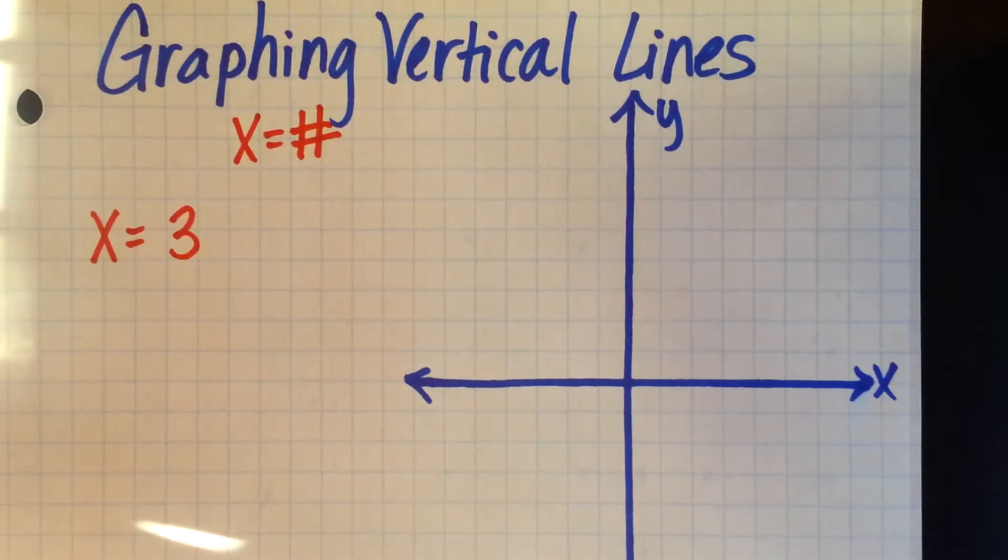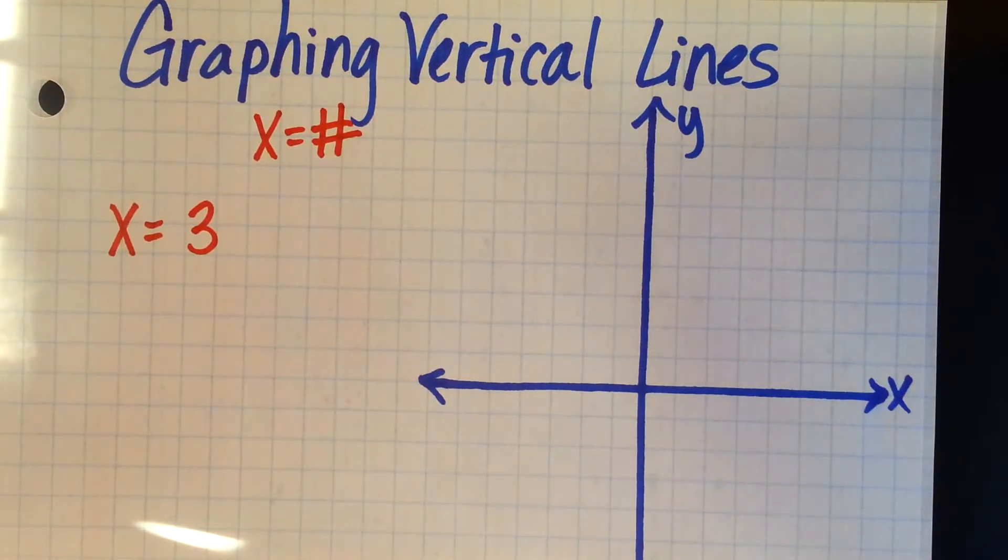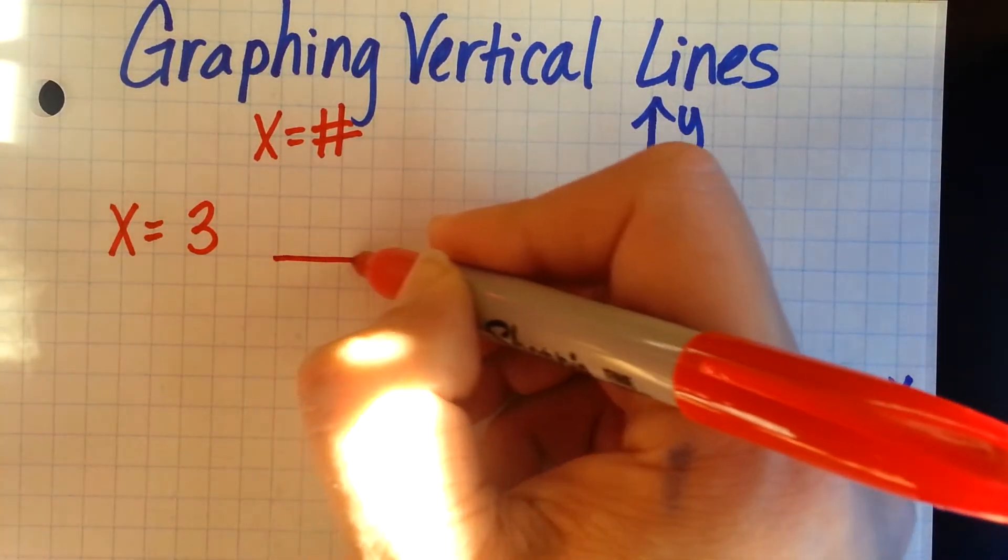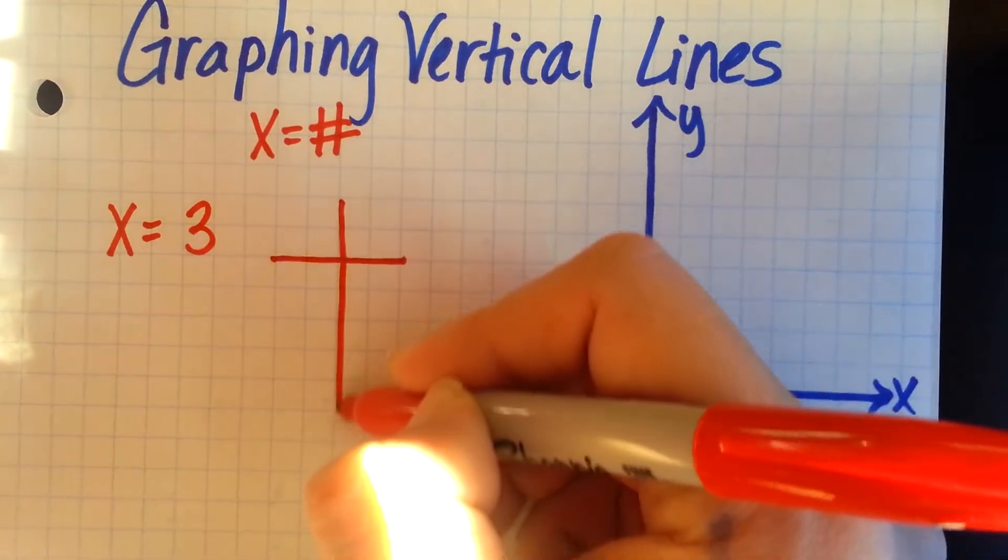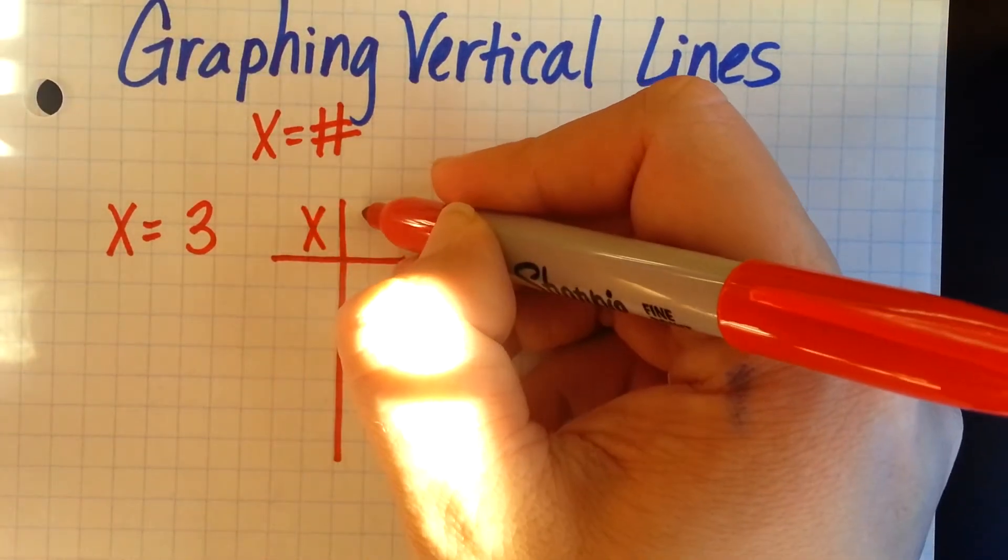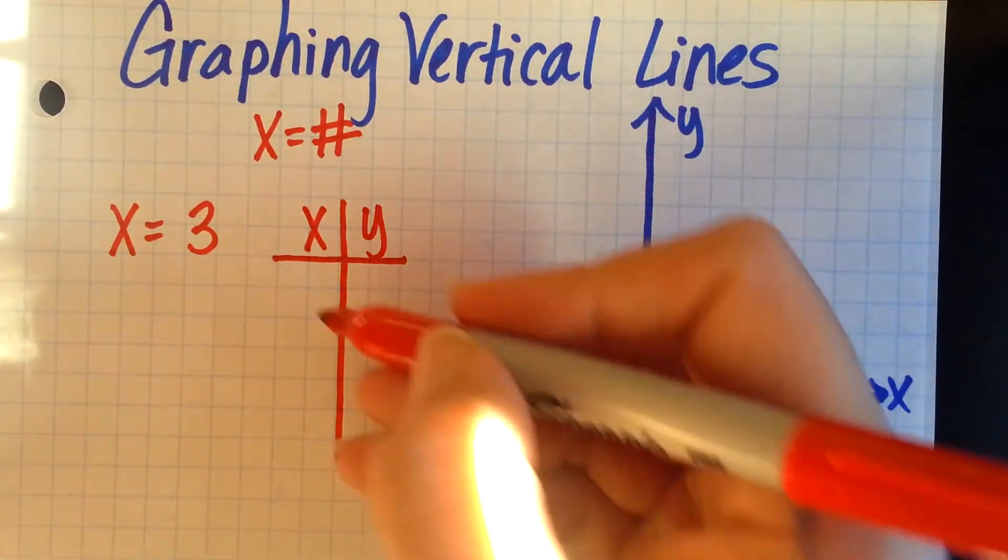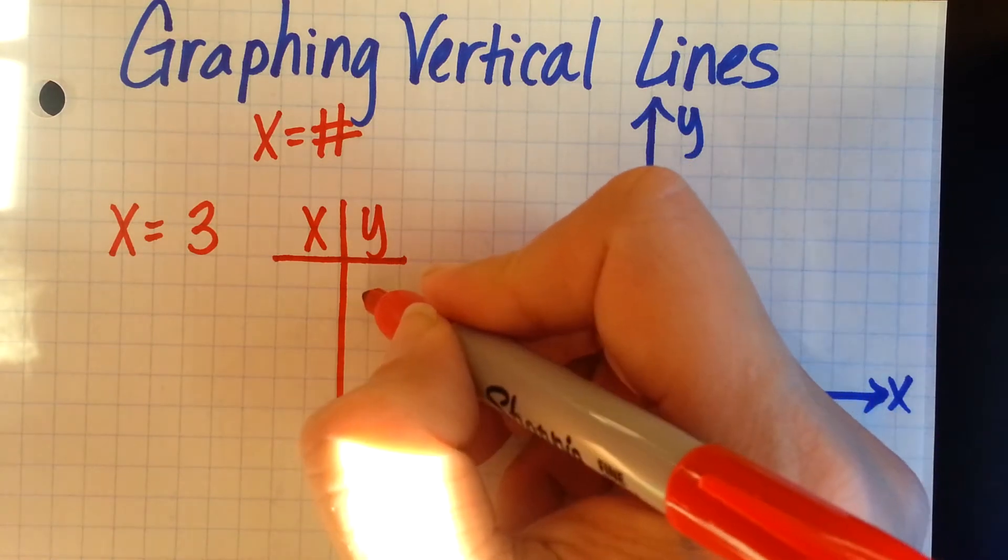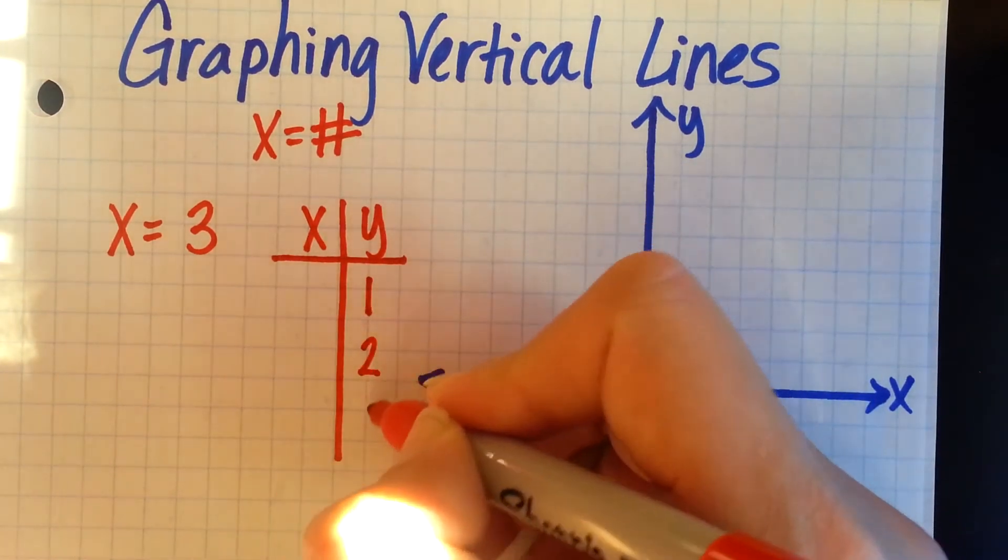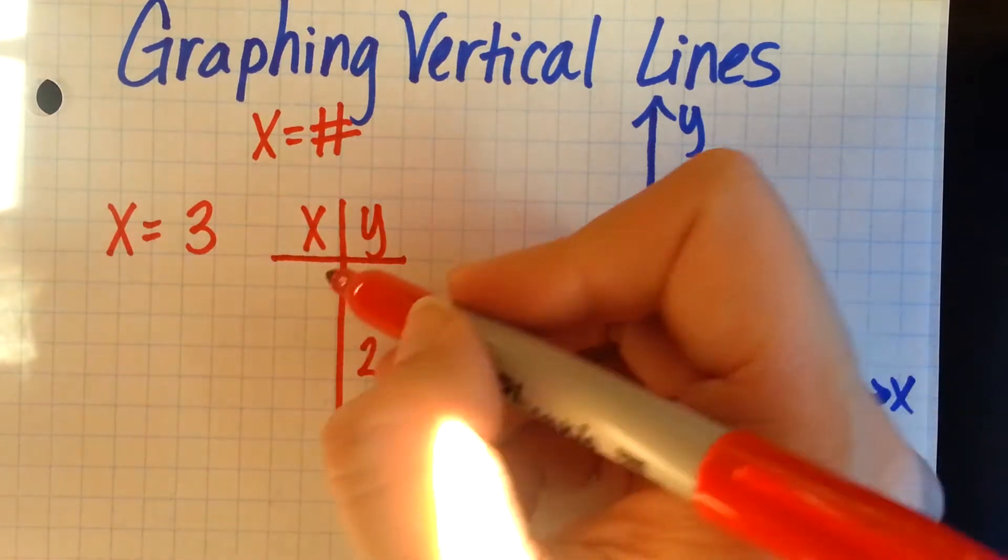This means that no matter what y values we have, our x value is always going to be 3. So if I make a little table, I said we could have any y value we wanted, so I'm just going to put some down. Our x is always going to be 3.